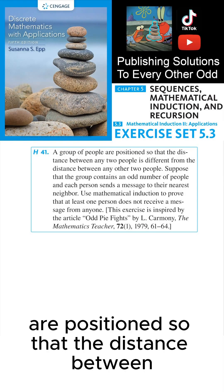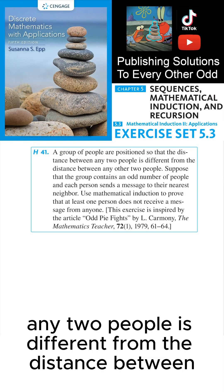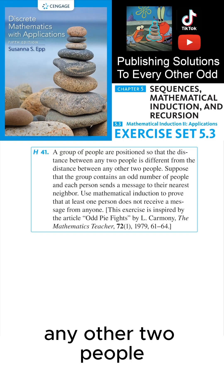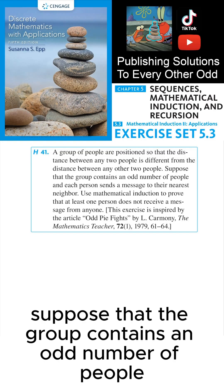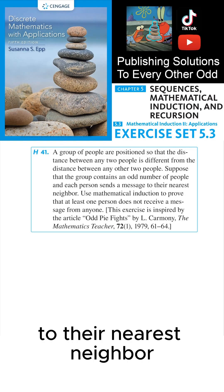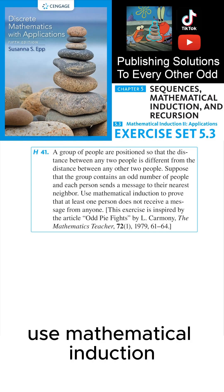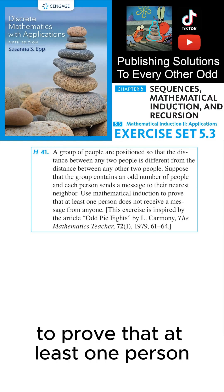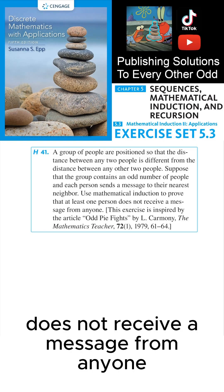A group of people are positioned so that the distance between any two people is different from the distance between any other two people. Suppose that the group contains an odd number of people and each person sends a message to their nearest neighbor. Use mathematical induction to prove that at least one person does not receive a message from anyone.